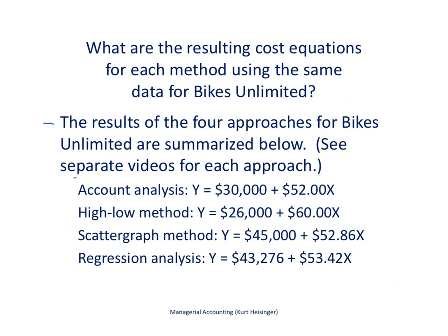Here are the results for each of the four methods. The goal is to estimate, as accurately as possible, what our costs will be in the future based on historical information. Each of these equations is relatively close, but regression analysis tends to be the most accurate. The format and goal are the same across all methods: y equals total fixed costs plus variable cost per unit times the number of units, estimating total costs given a certain level of activity.